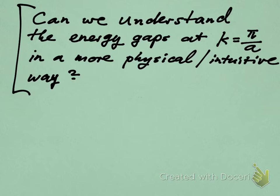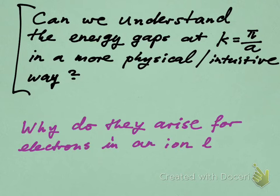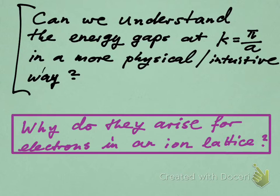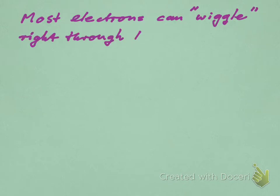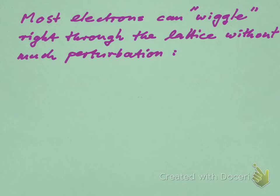Right now it's been pretty closely tied to the math of the Kronig-Penney model, but we'd like to step back a little bit and see if there's another way that's not so tied to the formalism that we can understand them. So why do they arise for electrons in an ion lattice? That's the question we'd like to address. Let's start sort of conceptually a little bit. The physics always has to come first. The math is only in the service of physics in this course.